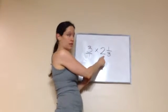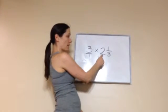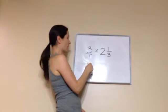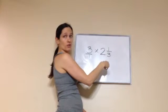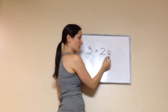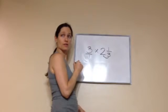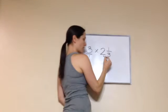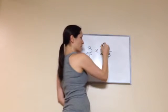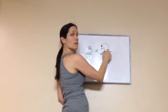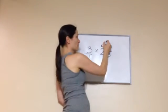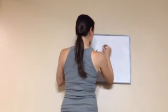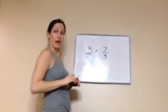Now, remember what to do with this? We're trying to make this mixed number into an improper fraction. Three times two is six. And then six plus one is seven. So seven over three. Right? Yes.